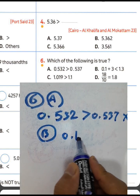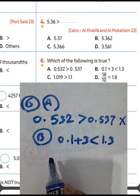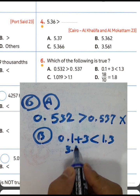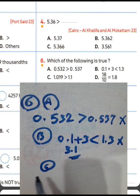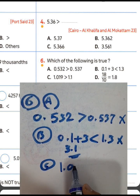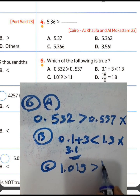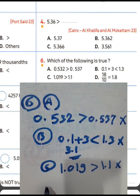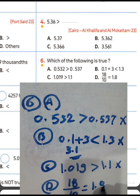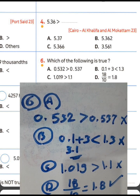Letter B: 0.1 + 3 is less than 1.3 — that equals 3.1, so it's false because 3.1 is greater. Letter C: 1.01 and 9 is greater than 1.1 — false, because 1.01 is less than 1.1. Letter D: 18 over 10 equals 1.8 — that's true, because 18/10 means the point is after one digit, giving 1.8. Choose letter D.